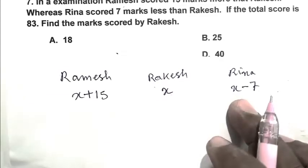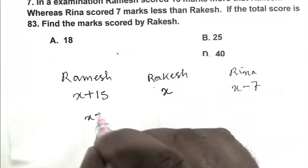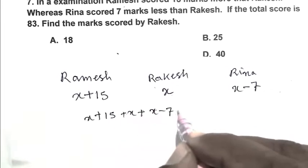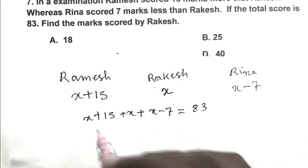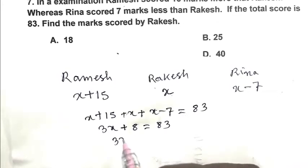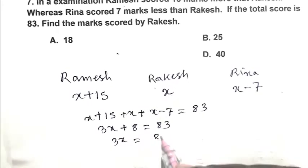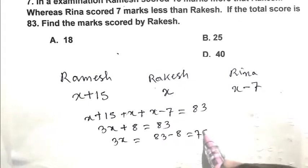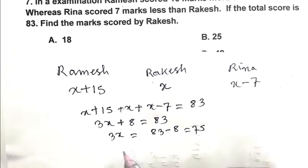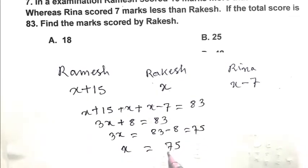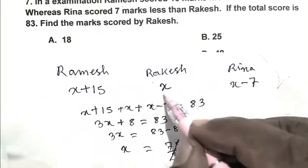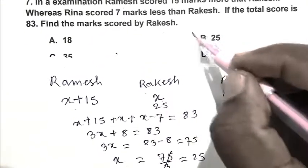Adding all three scores, we get 83. So X plus 15 plus X plus X minus 7 equals 83. That gives 3X plus 8 equals 83, so 3X equals 75, and X equals 25. So Rakesh scores 25 marks, and B is the right answer.